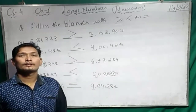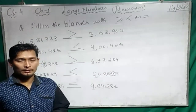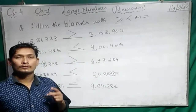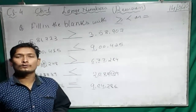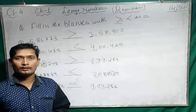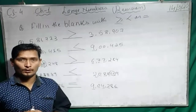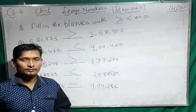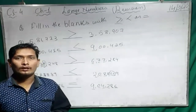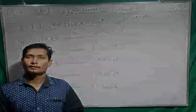Keep it in mind: whenever we use a symbol, the open mouth always shows the greater number and the closed mouth shows the smaller number. Clear, children? You do practice at home. Thank you everyone.